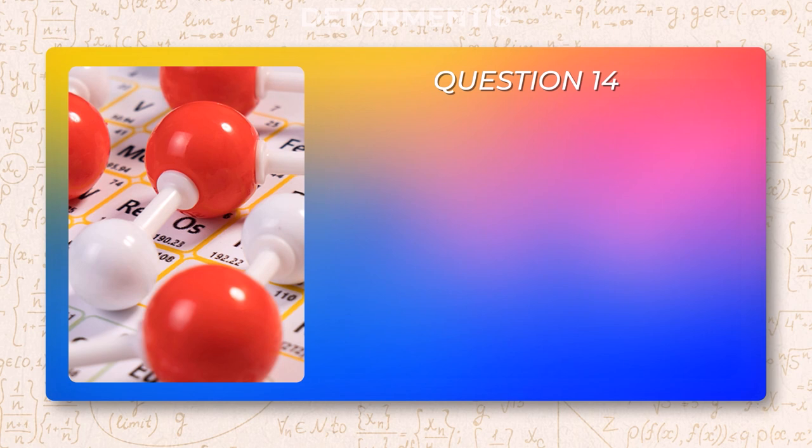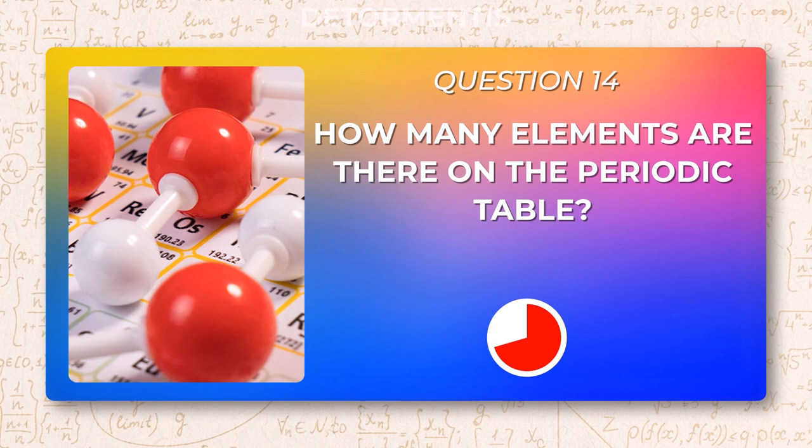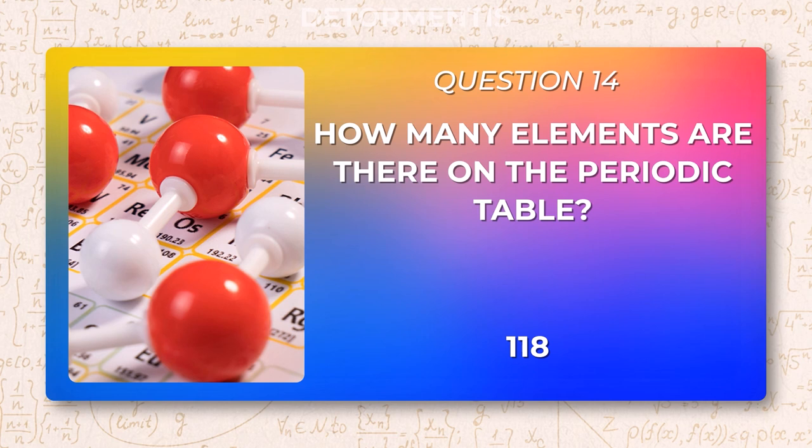How many elements are there on the periodic table? 118.